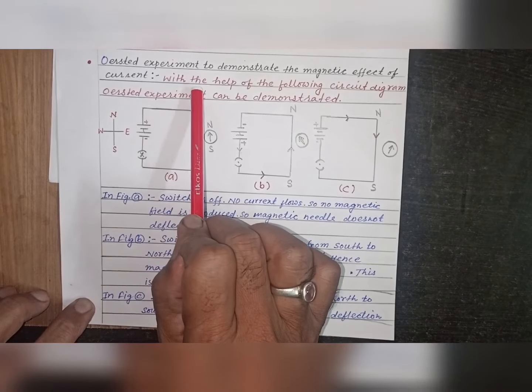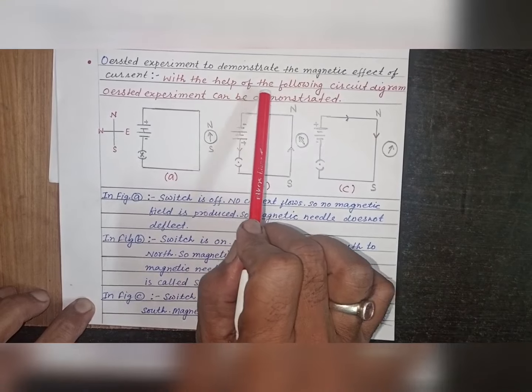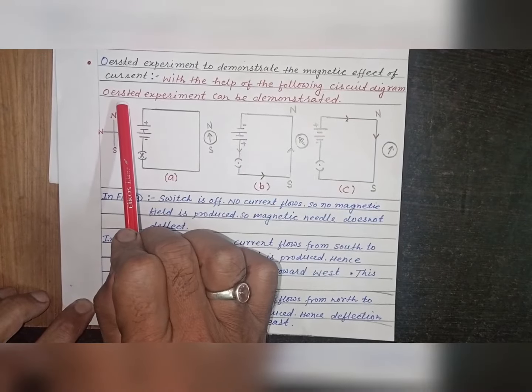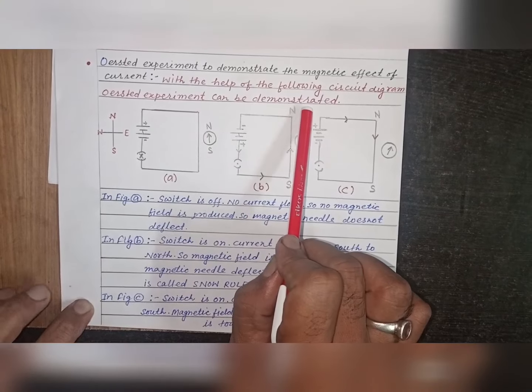With the help of the following circuit diagram, Oersted experiment can be demonstrated.